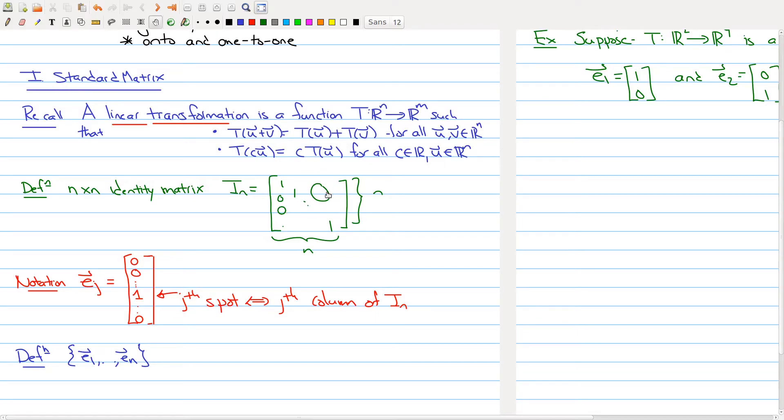This large zero here just means that you have a big block of zeros. Let me just draw what I₃ looks like. I would have 1, 0, 0, 0, 1, 0, 0, 0, 1. So I have ones down the diagonals and zero everywhere else.